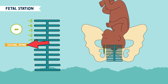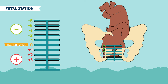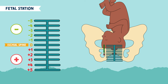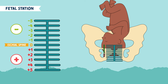What happens if the baby falls below the ischial spine? We count this in positive numbers. So you have plus one, plus two, plus three, plus four, and plus five. Positive one means you are one centimeter below the ischial spine. Positive two means you are two centimeters below the ischial spine, and so on.